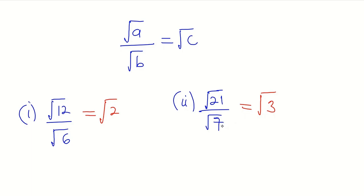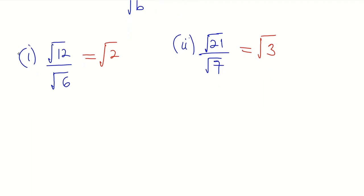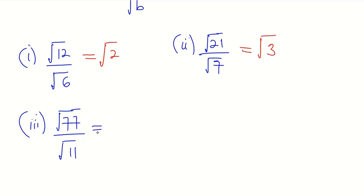And that is the division of sets. Now we can also consider this example: square root of 77 divided by square root of 11. You can pause the video and try. We can see that 11 goes into 77 seven times, so our answer is going to be square root of 7.